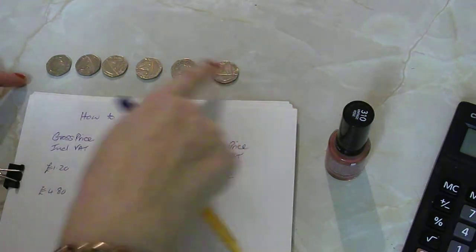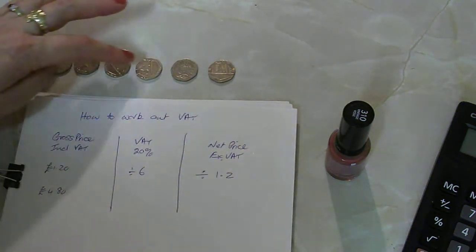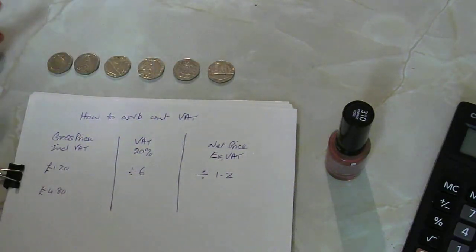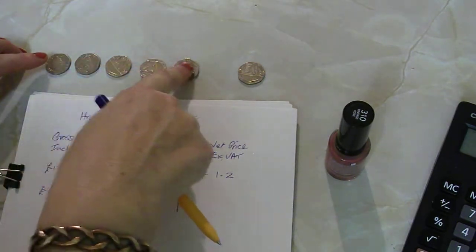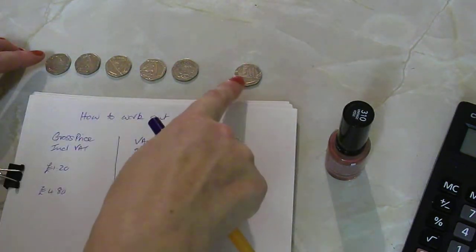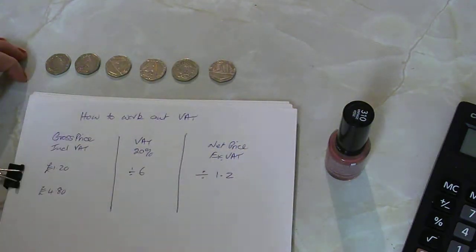So here I've got six 20p pieces and together they make 120. So that is the cost of the actual goods and then that is the tax that you're paying to the government. And together they make 120%.